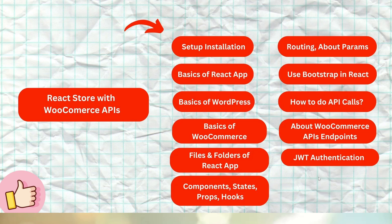Once we complete all these basic concepts of React, it will be much easier to go step by step to create this type of application. Then we will explore all about the APIs and the API concept of WooCommerce in WordPress. Additionally, inside this course we will cover the concept of JWT authentication, which will be used to authenticate the APIs we consume using our WooCommerce API endpoints.